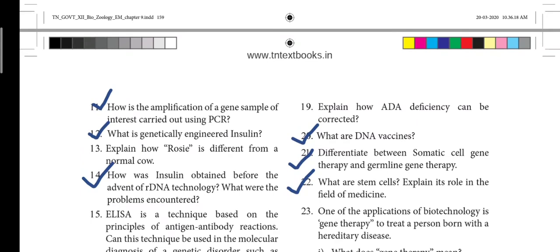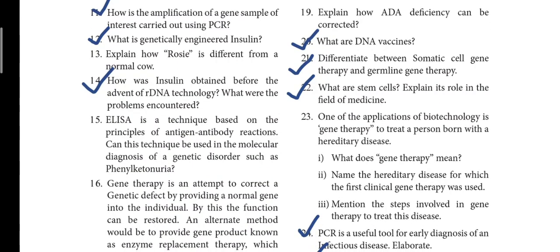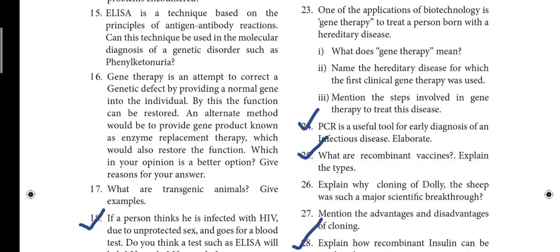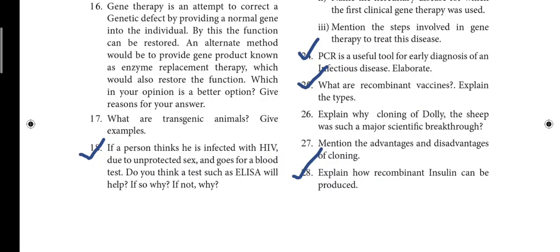20th question — what are DNA vaccines? 21st question — differentiate between somatic gene therapy and germline gene therapy; it's an important three-mark question. 22nd question — what are stem cells? Explain their role in the field of medicine; also an important three-mark. 24th question — PCR is a useful tool for early diagnosis of infectious disease; elaborate. PCR is a very frequently asked question. 25th — what are recombinant vaccines? Explain the types. 28th — explain how recombinant insulin can be produced.